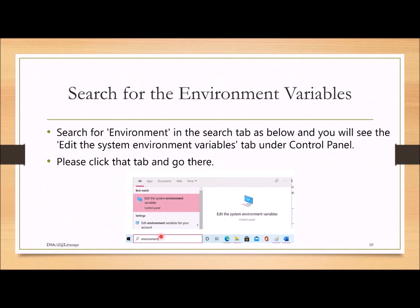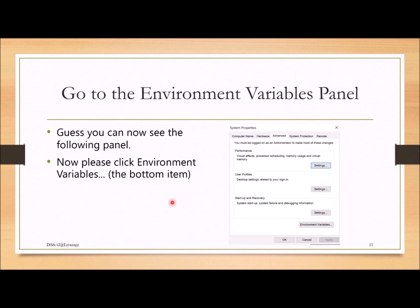Go to the search bar in Windows 10 and type 'environment'. You will see the option 'Edit the system environment variables' appear — that is in the Control Panel. Click that and go there. Then click the Environment Variables button, which is at the bottom of the Advanced tab.